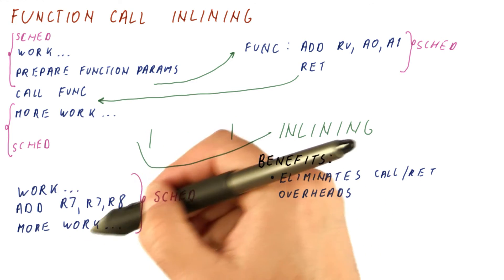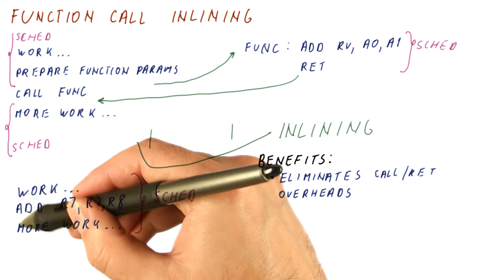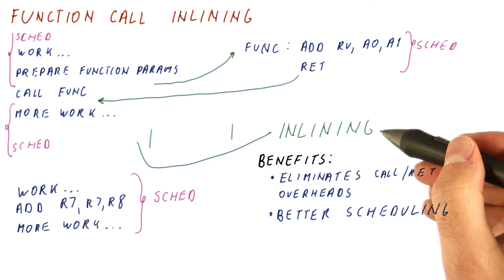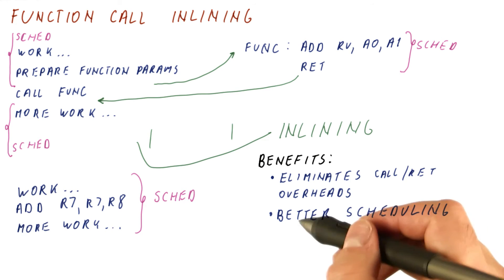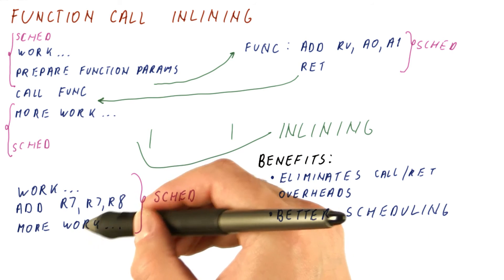For example, the work from the function can easily be moved around, assuming that the dependence is allowed. So inlining also lets us do better scheduling, just like loop unrolling did, and for the same reason. Now we have more work that we can play with.